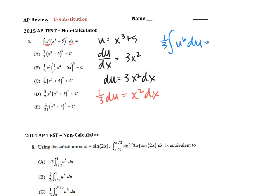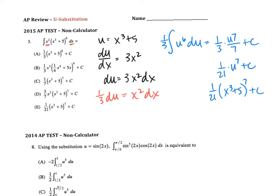Now this antiderivative seems much more manageable. The antiderivative of u to the 6th is u to the 7 over 7, plus c, giving me 1 over 21 times u to the 7th plus c. I can substitute in my u, which was x cubed plus 5, and that gets me answer e.